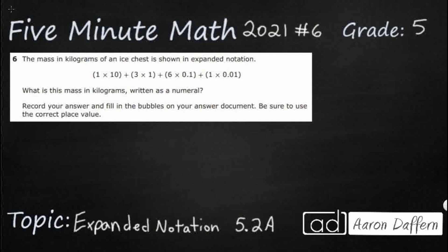We have the mass in kilograms of an ice chest shown in expanded notation here, and we need to write it as a numeral. First, let's make sure we understand this means standard form. So we need to take this expanded notation, which is a series of multiplication problems all added together, and just put it into numbers.